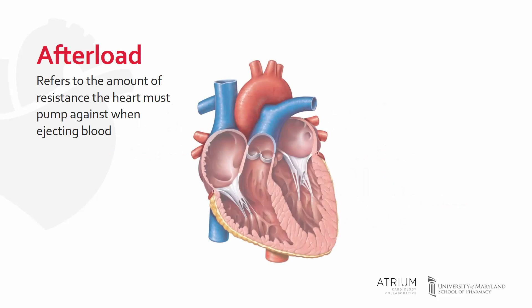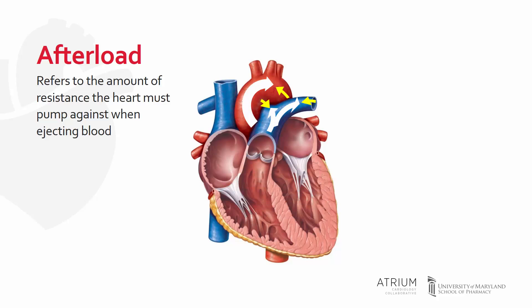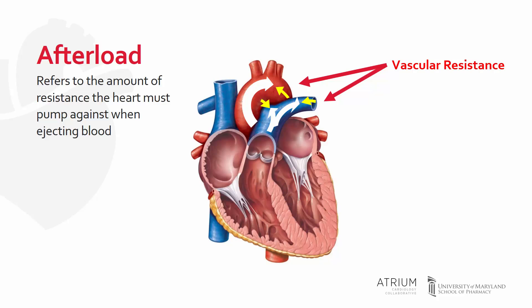Afterload refers to the amount of resistance the heart must pump against when ejecting blood. A major determinant of afterload is vascular resistance. Systemic vascular resistance refers to the impedance of flow imparted by the peripheral vasculature, whereas pulmonary vascular resistance refers to the impedance of flow imparted by the pulmonary vasculature.